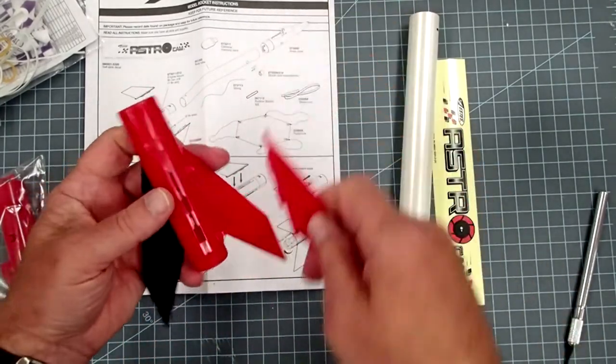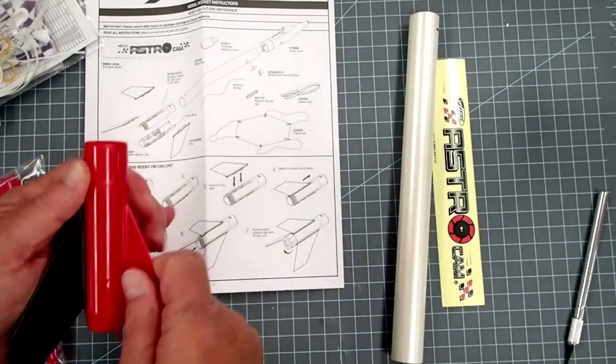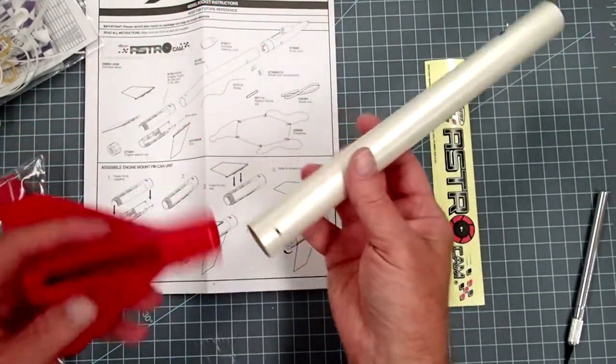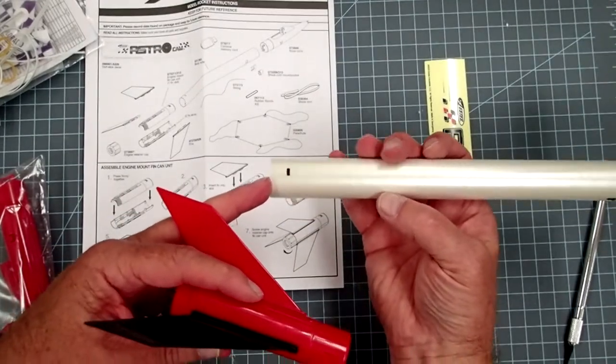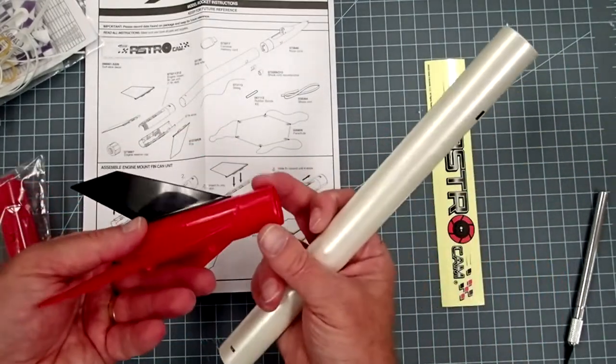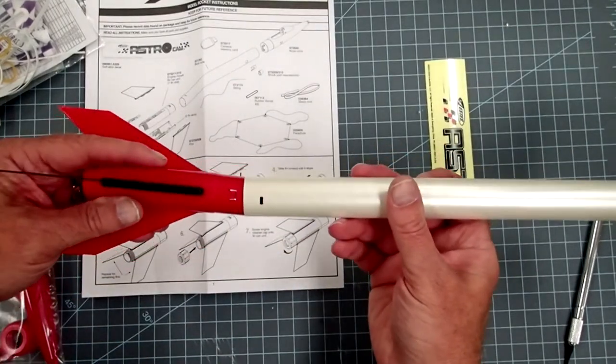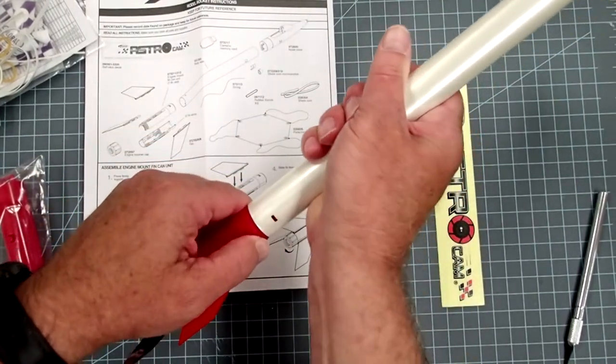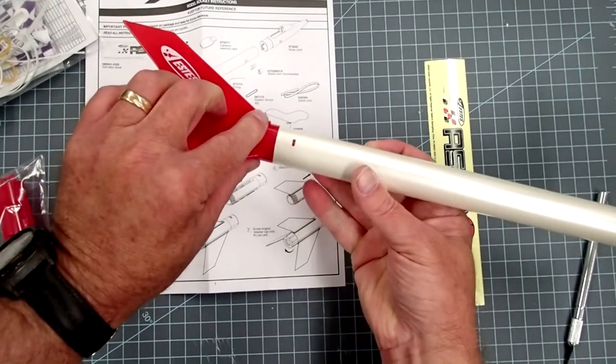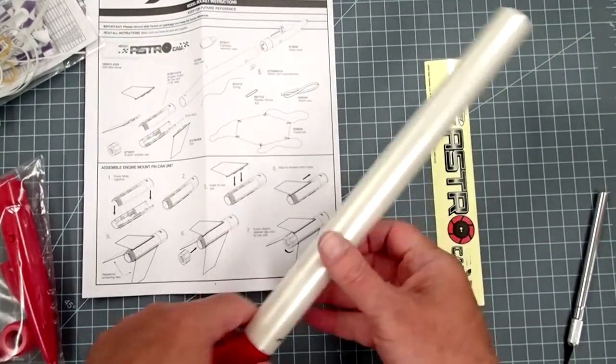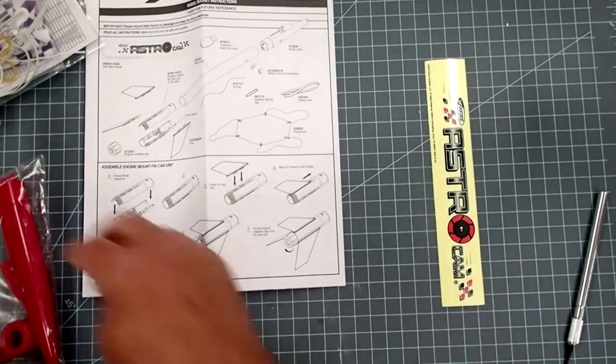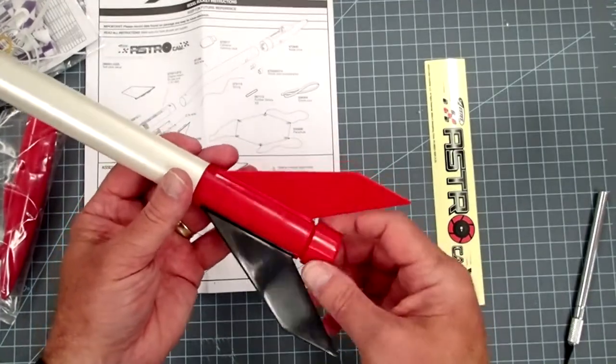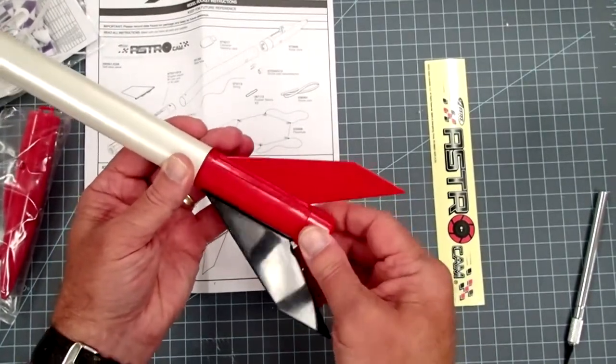And then this slides into this end of the body tube. It has two small slots in it, and those correspond to these two tabs here. So, I'm just going to slide that on. If you need to, you might want to push in a little bit on the tabs to get them sorted. And then they will pop into place on those slots. And then the motor retainer simply screws on here. And this just helps keep everything together, even if you don't have the motor in place.